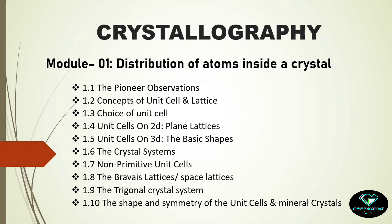Class nine will brush up our conception of crystal systems again, specifically to learn about the trigonal crystal system. We know there are seven crystal systems in crystallography, and the trigonal system is the most doubtful concept among them. We always feel doubt about why the trigonal crystal system is different from the hexagonal system — that doubt will be cleared in class nine. The tenth class of module one will cover the relationship between the shape and symmetry of unit cell and mineral crystals.